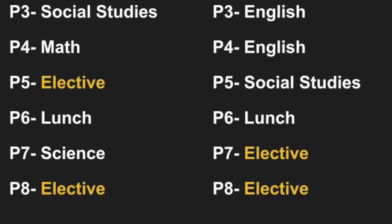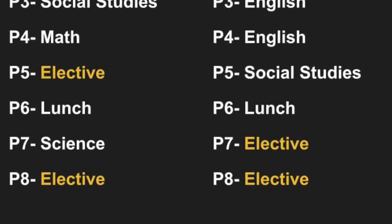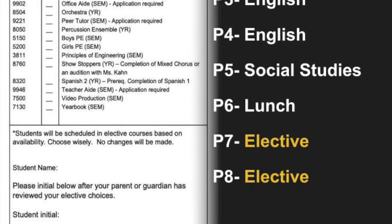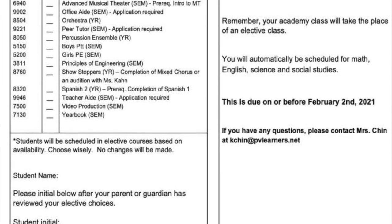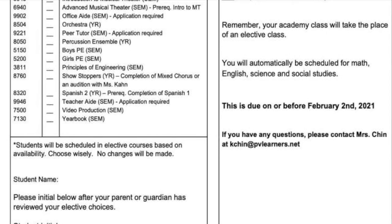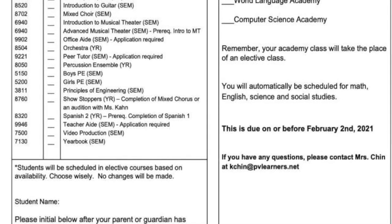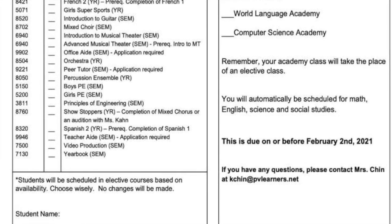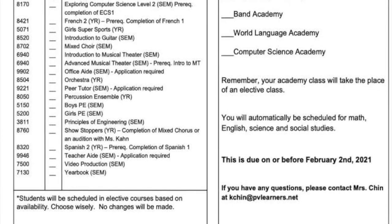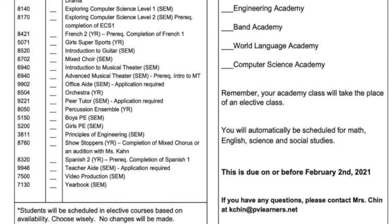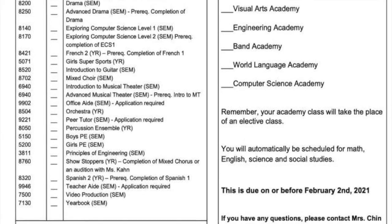With that in mind, let's take a look at the form and the elective classes that are available. As you look at the form, you will see the elective classes listed on the left-hand side. After each elective class listed, you will either see SEM, which means the class is a semester-long class, or YR, which means the class is a full-year class.